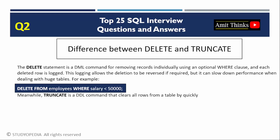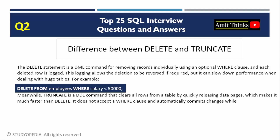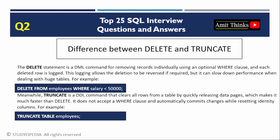TRUNCATE is a DDL command that removes all rows by deallocating data pages. It is faster than DELETE as it minimizes logging, does not support a WHERE clause, and resets identity columns. It is auto-committed. Example: TRUNCATE TABLE employees removes all rows by deallocating data pages. Use TRUNCATE for full table clearance and DELETE for conditional removal.